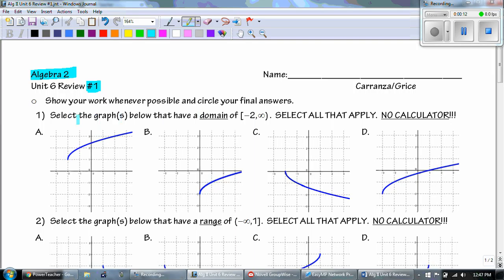We are supposed to select the graph or graphs below that have a domain of negative 2 to positive infinity. Select all that apply. No calculators! Just remember that when we're talking about the domain, we're talking about the x values. So that means at negative 2, I need to be greater or equal, or negative 2, it goes to infinity. And that's A.